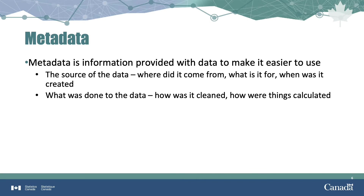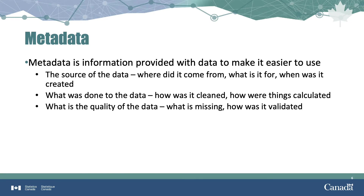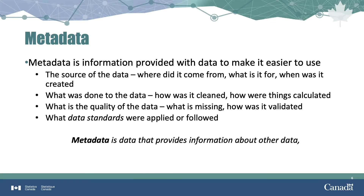Another example of metadata is information about what has already been done to the data: how was it cleaned, how was it processed, how were things calculated? Metadata can also include a description of the quality of the data — for example, what's missing and how was it validated? If data standards were followed in the creation and processing of the data, a description of them can be included in the metadata as well. In a nutshell, metadata is data that provides information about other data, making it easier to find, interpret, trust, and use.